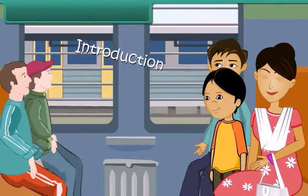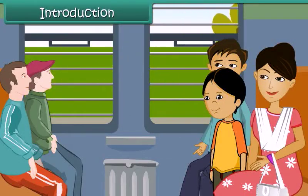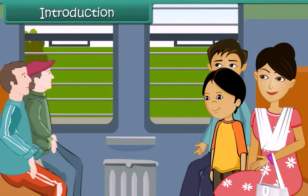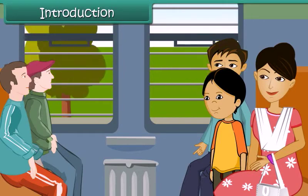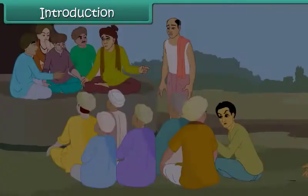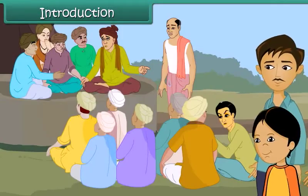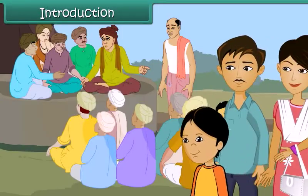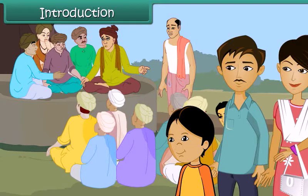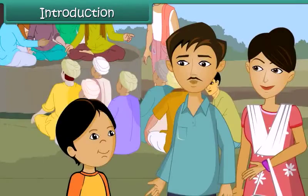Bari lives in a city with her parents. She is going to a village for summer vacations where her grandparents live. This is the first time she is visiting an Indian village. On the way from the railway station to her grandparents' house, she finds a group of five elderly people sitting under a banyan tree. They are listening to some men standing in front of them. She is curious to know what is happening.